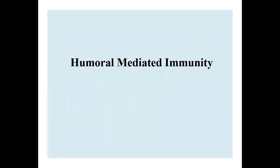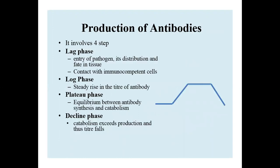In this class, I am going to discuss about humoral mediated immunity. It involves the production of antibodies in four steps. First is the lag phase, where pathogens enter the body, distribute in tissues, and contact with immunocompetent cells. During the log phase, a steady rise in the titer of antibodies is observed in body fluids.